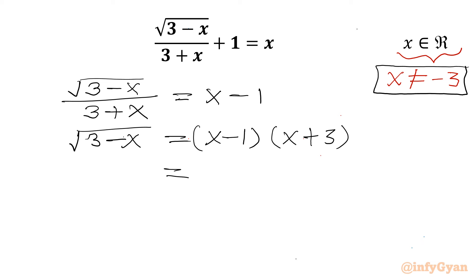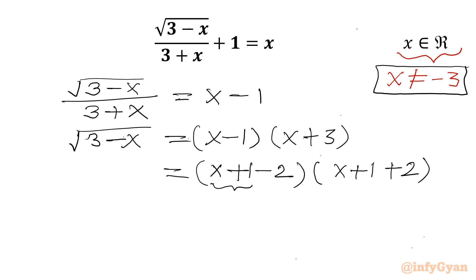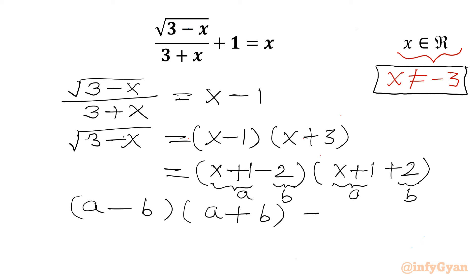Now the first bracket (x minus 1) can be written as (x plus 1) minus 2, and the second bracket (x plus 3) can be written as (x plus 1) plus 2. If we let a equal x plus 1 and b equal 2, then it is the (a minus b)(a plus b) identity, which gives a squared minus b squared. So let's apply that.